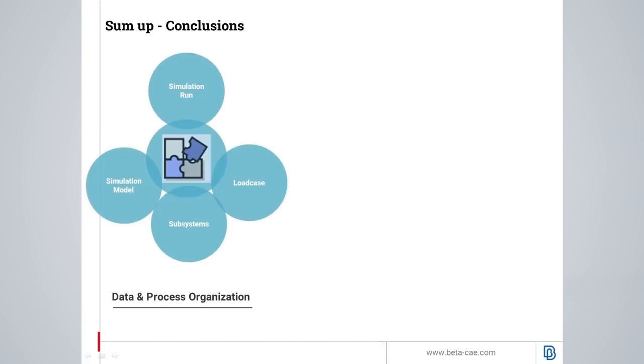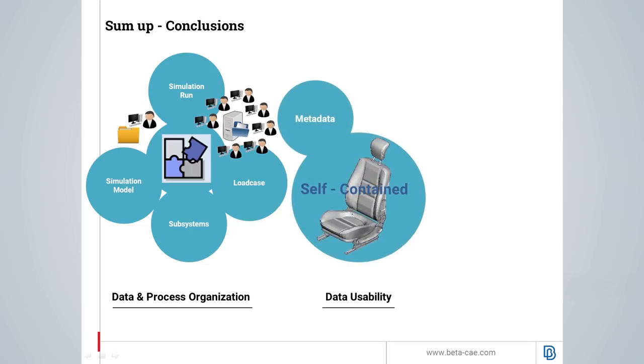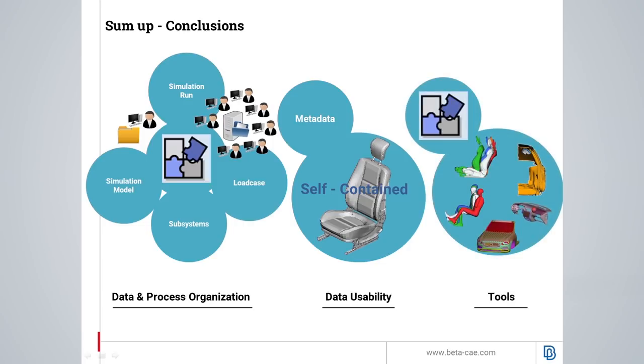To sum up, Beta introduces new terms for data and process organization: subsystem, simulation model, load case, and simulation run. The model browser offers the ability to work either by storing data locally as a single unit or through a server as a member of a team. The various data are self-contained files allowing data reusability and error-free parallel work. The output of all existing tools are adapted in order to communicate with the new concept of the model browser. Thank you.